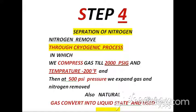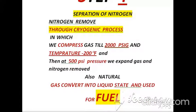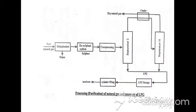Step 4 is separation of nitrogen through the cryogenic process. In this process, we compress the gas to 2000 PSIG and the temperature is brought to negative 200°F. Then at 500 PSI pressure, we expand the gas and nitrogen is removed. Natural gas is also converted into liquid state and used as fuel.